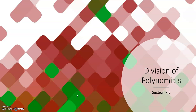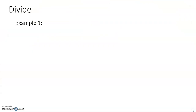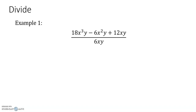Section 7.5, Division of Polynomials. We're going to be dividing. Example 1 is 18x cubed y minus 6x squared y plus 12xy divided by 6xy.